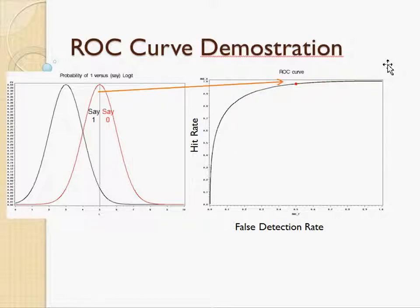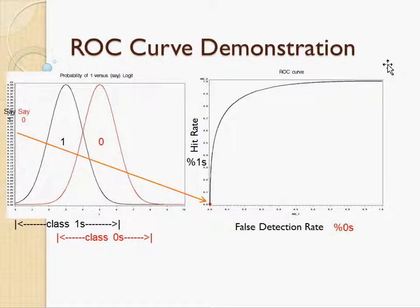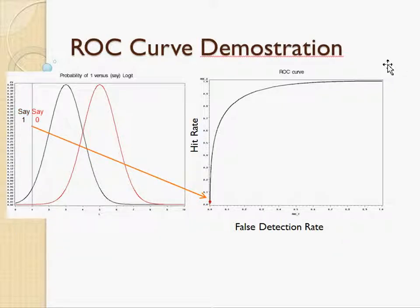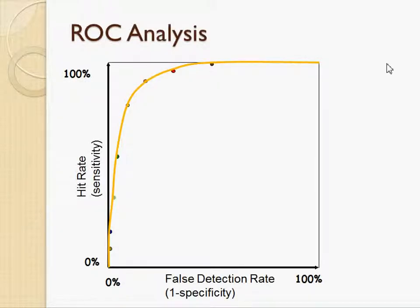Let me show this again to give a better idea of how the ROC curve is constructed. Starting with the threshold on the left and moving it to the right, the ROC curve is constructed and will look like this. From the final ROC curve, we can see that as the threshold increases, the hit rate increases while the false detection rate also increases. Ideally, the best optimization is to find the threshold that gives the top-left corner — where the hit rate is 100% and the false detection rate is 0%. That is the ideal case, but in reality this cannot be achieved.